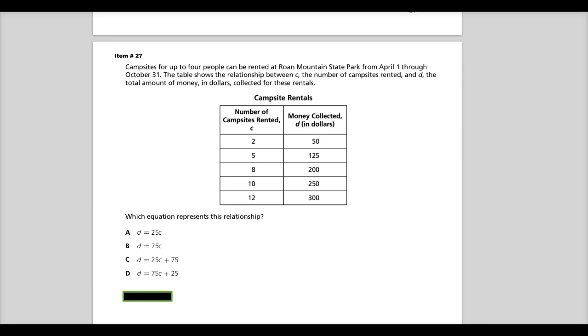The question says campsites for up to four people can be rented at Roan Mountain State Park from April 1st through October 31st. See how they went local on you, or at least statewide and they used local references? The table shows the relationship between C, the number of campsites rented, and D, the total amount of money in dollars collected for these rentals.